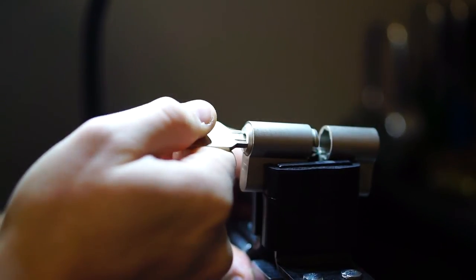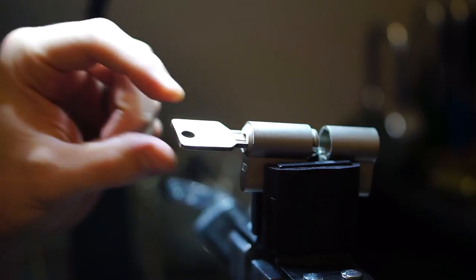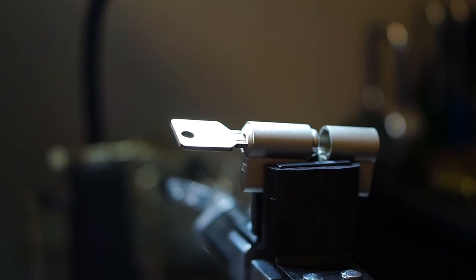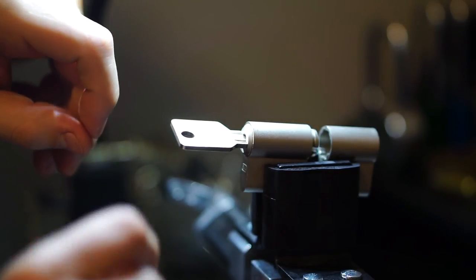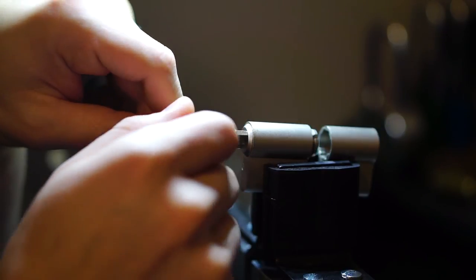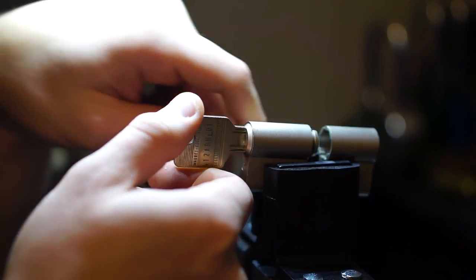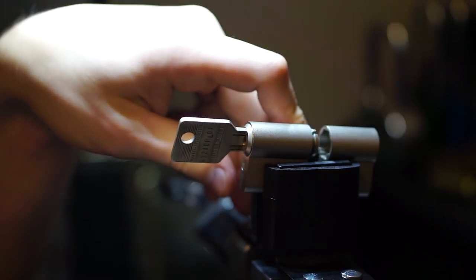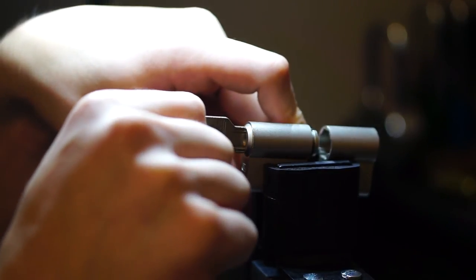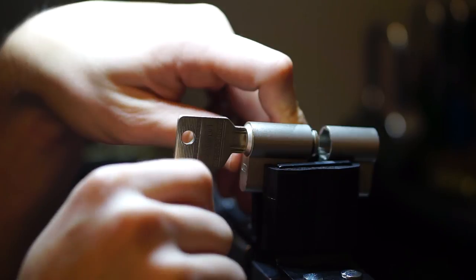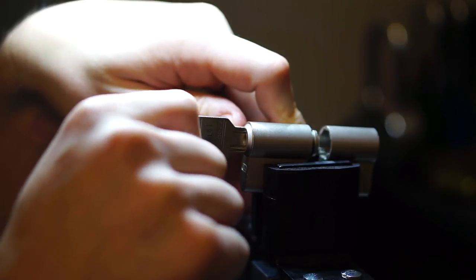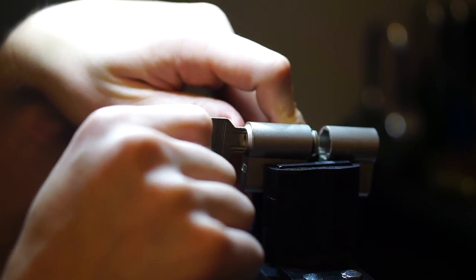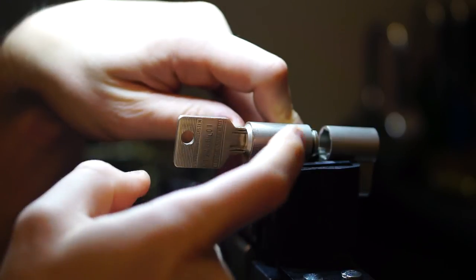You always want to verify function of your lock with the key. In some cases when you're reinstalling it, if your little ball bearing does not go in the right place or it pops out, you may be able to turn your key about that far or you may not be able to turn your key at all.